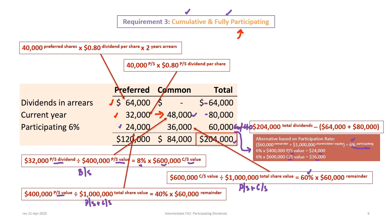Of the total $204,000 in dividends, $120,000 is allocated to the preferred shareholders and $84,000 to the common shareholders.